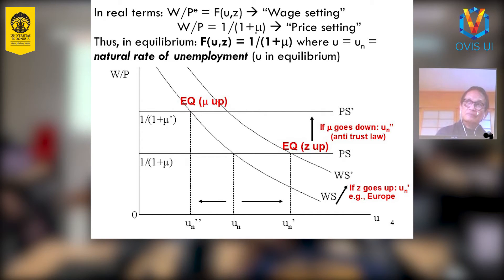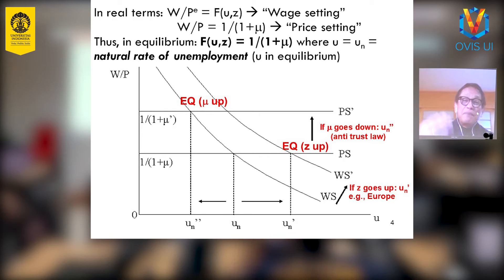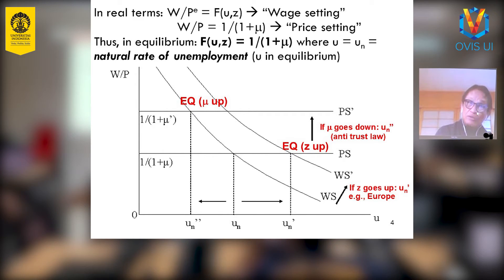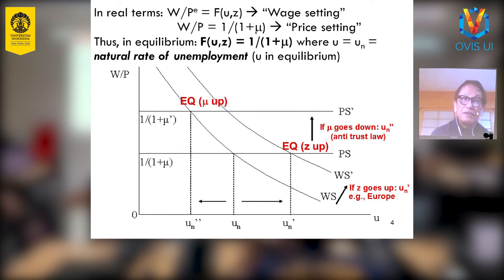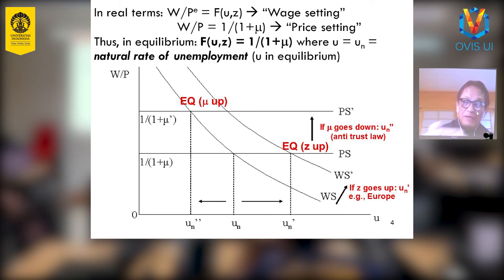A student asks: if institutions are stronger, the rate of unemployment is also higher — does that mean a stronger labor union is not good? The answer is: based on this chart, yes. That question is very good and it is related to the level of wages, which is also determined by minimum wages. We'll reach that point shortly, as it's all related to minimum wages.